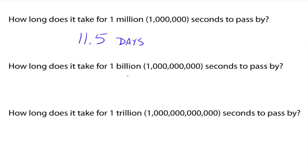So same question for a billion. How long does it take for a billion, that's one followed by nine zeros, for a billion seconds to pass by? Well, about 32 years.